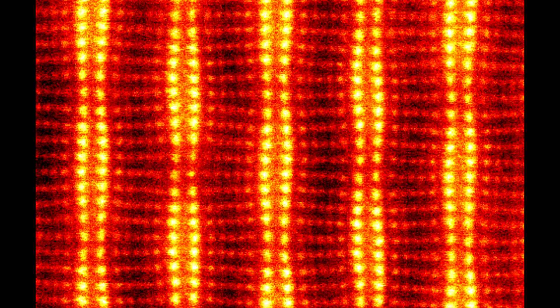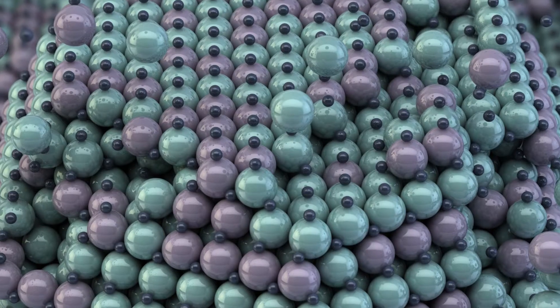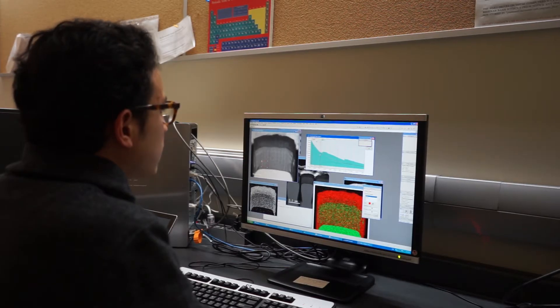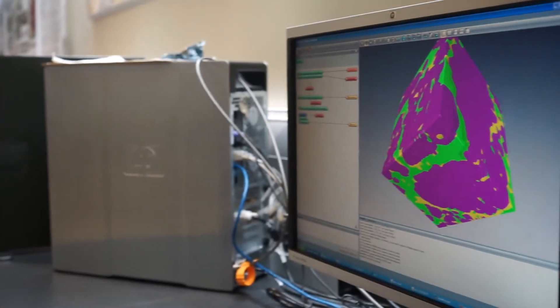The original idea was to provide users from different disciplines, from chemistry, physics, materials engineering, and provide them with capabilities to understand the structure of materials at different levels. For example, we have a chemist using the microscope to study the structure of carbon nanotubes. We have materials engineers developing automotive materials, lightweight alloys. We have biomedical engineers developing new sensors for biomedical applications, and we have materials researchers using the center to develop biomaterials for implants.